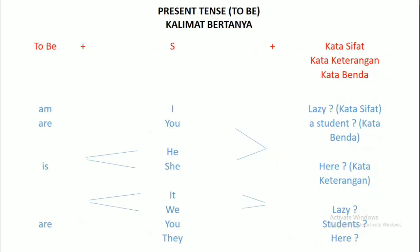Berikutnya kalimat bertanya. Present tense to be kalimat bertanya: to be-nya di awal, to be plus subject plus kata sifat, kata keterangan, kata benda. Misalnya: Am I lazy? — apakah saya malas? Atau Are you lazy? — apakah kamu malas? Jawabannya ya atau tidak. Are you a student? — apakah kamu seorang pelajar? Jawabannya: Yes, I am. No, I am not.